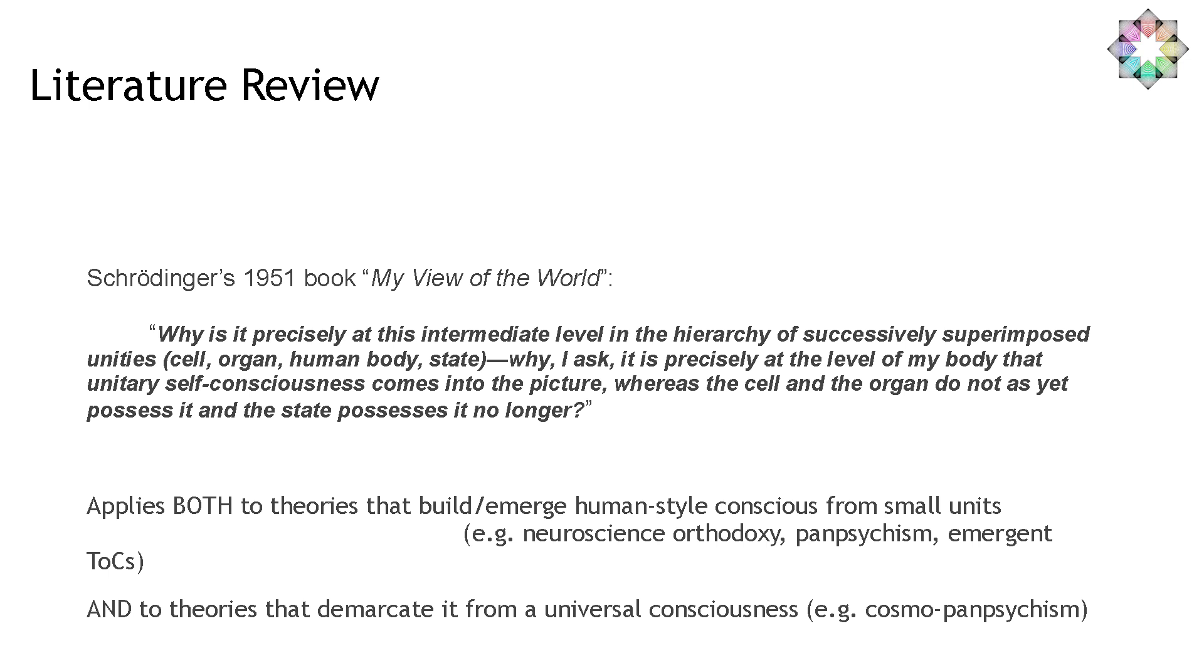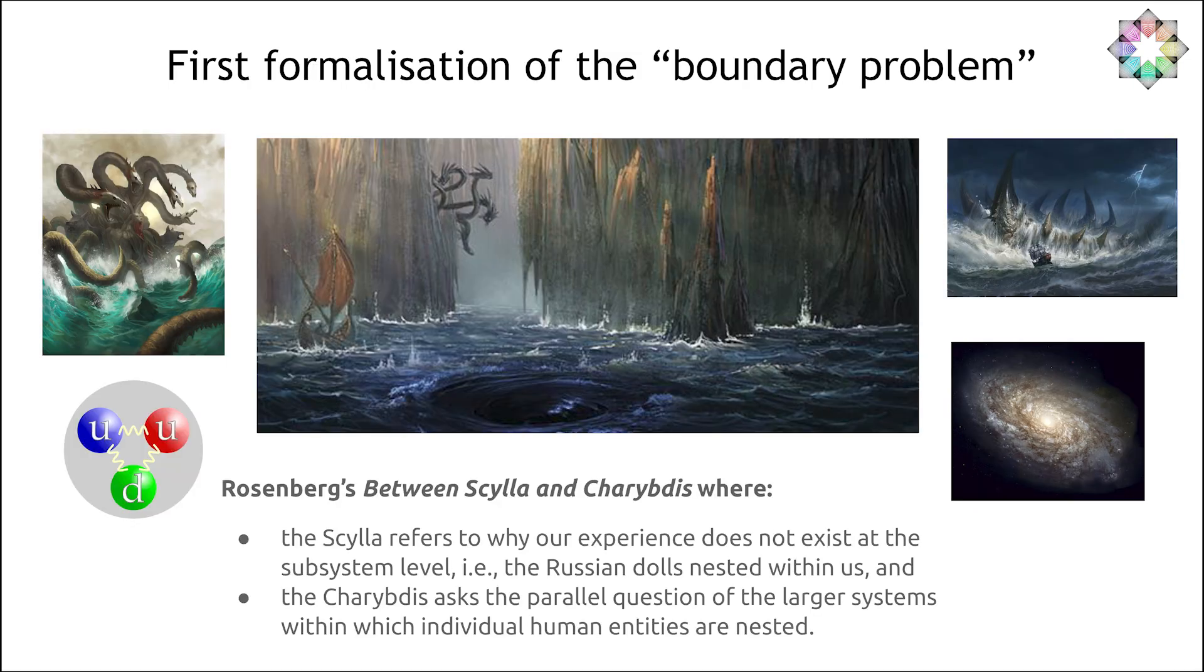We did a literature review on this question. It's not really well formalized in general, except for one particular author that I will explain. But famously, I would say Schrödinger was a person who kind of highlighted a lot of these problems. He's wondering, why is it that the phenomenal boundary of our experience happens at the level of humans? Like, why aren't we atoms? Why aren't we galaxies? Why are we here in this scale? It's very, very puzzling. Rosenberg really formalized it. He kind of described it as the chasm between Scylla and Charybdis, where Scylla is all of these other subsystems we could be, like cells or organs. And Charybdis is all of these other mega systems we could also be, like towns or the human species or something like that. Why are we here? Why is the boundary of our experience right here?